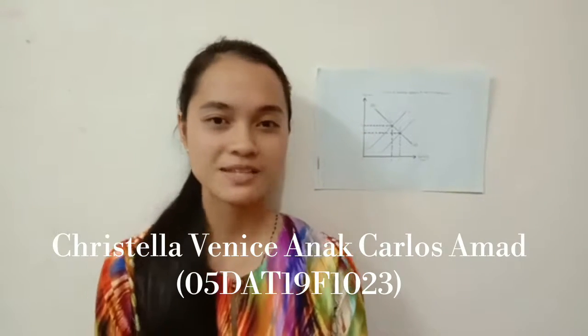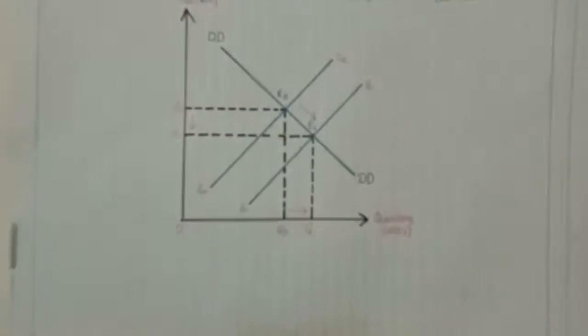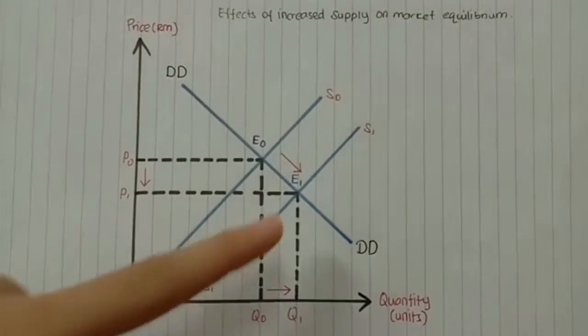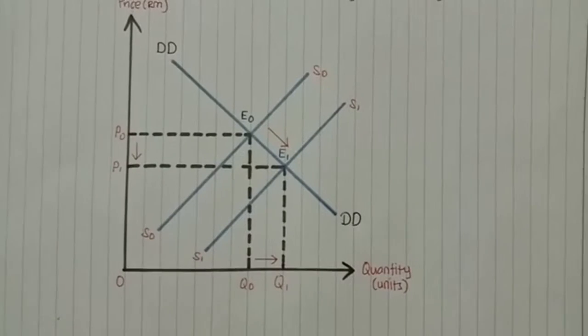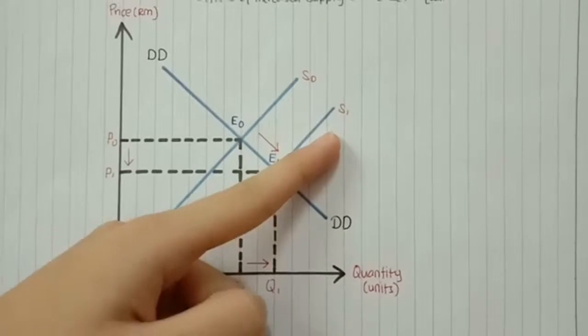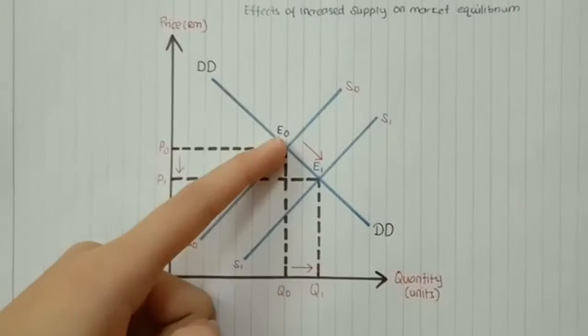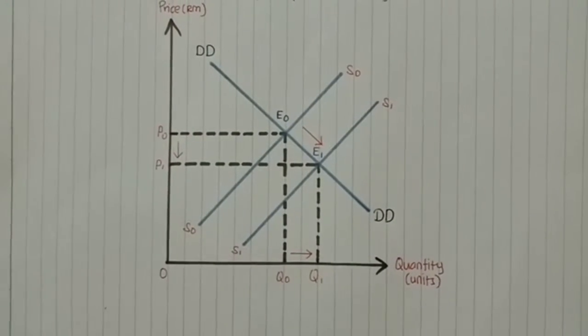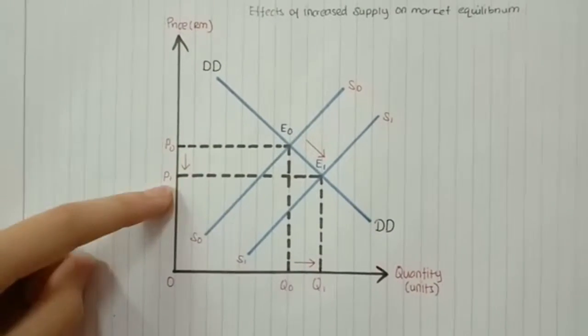My name is Crisela Benis and I will explain about effects of increased supply on market equilibrium. When supply increases, supply curve will shift to the right from S0 to S1. The equilibrium point will shift from point E0 to E1. Consequently, the price will decrease from P0 to P1.